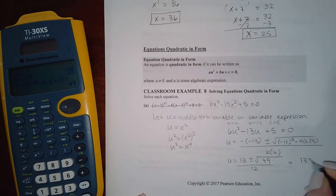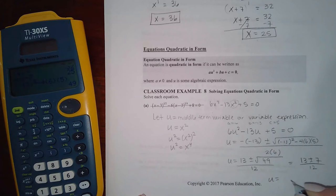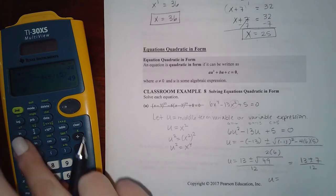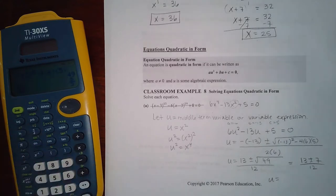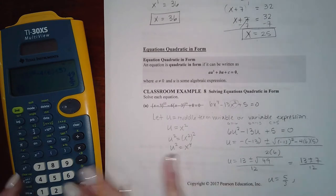That's the same as 13 plus or minus 7 over 12, which is the same as 20 over 12, or 5 thirds. And if I minus, that's the same as 6 over 12, which is 1 half.